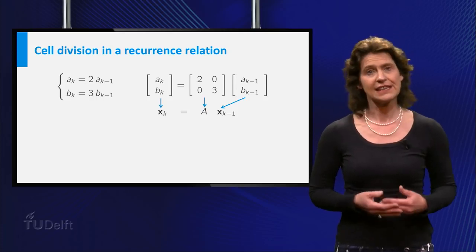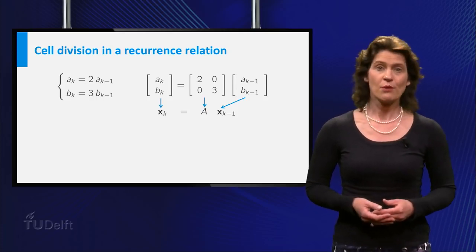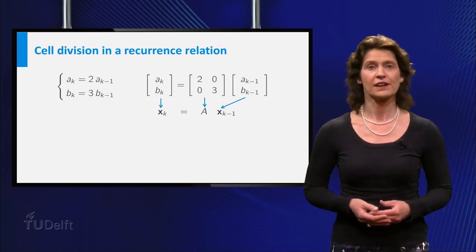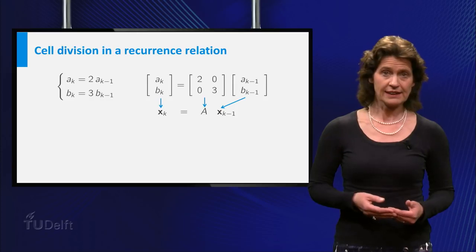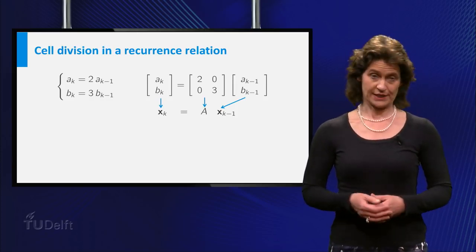As xk equals the matrix A multiplied by the vector xk-1, where the vector xk has components ak and bk, and you can see that A is a diagonal matrix.